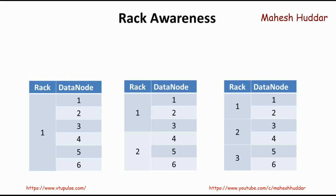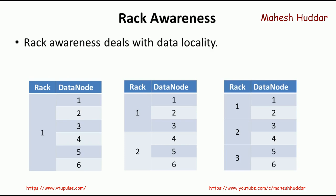What is Rack Awareness? Rack Awareness deals with something called Data Locality. If the data is available on the local machine, the performance of the system will be best. Because if all the information is available at the same place for processing the request, it will be quite fast. So if the data is available on the local machine, the performance will definitely be fast.